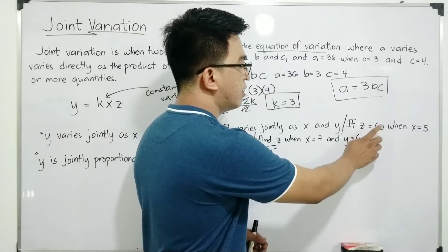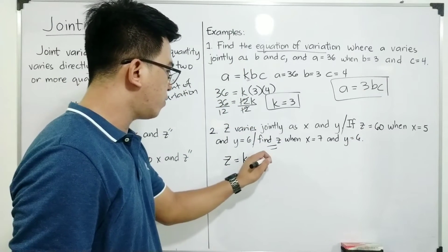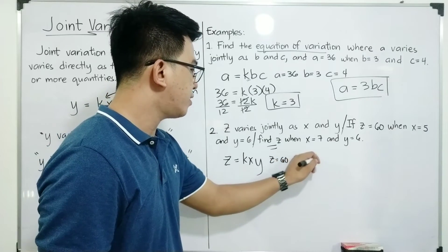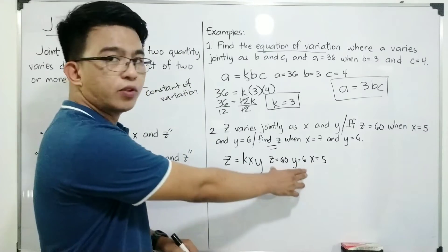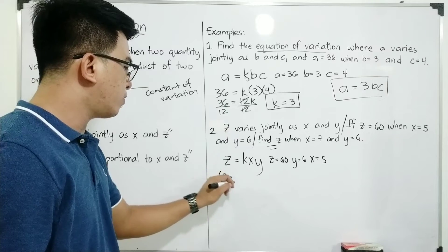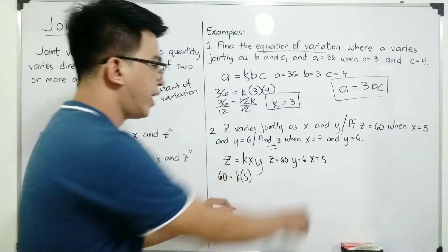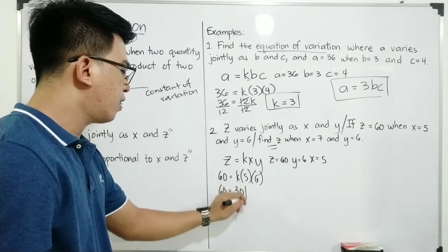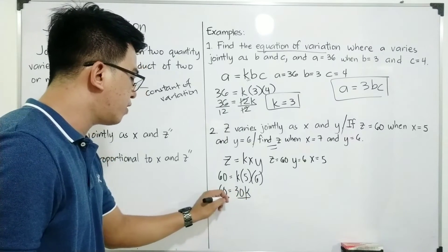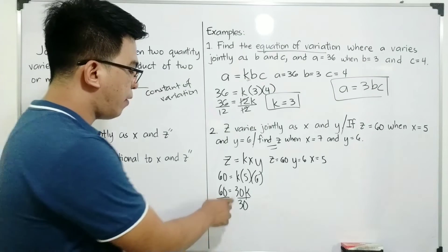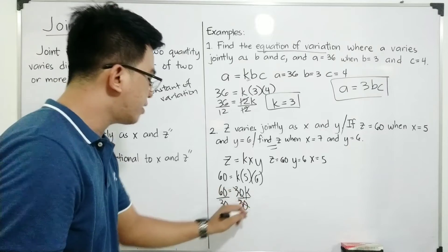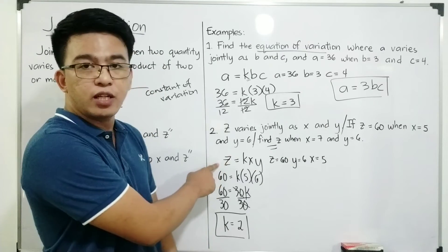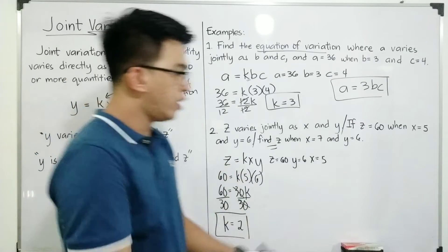Using the given values: z is equal to 60, y is equal to 6, and x is equal to 5. We substitute all these values into the equation: 60 is equal to k times 5 times 6. Simplifying gives us 60 is equal to 30k. Divide both sides by 30 — the purpose is to isolate k — cancel and cancel. Your k is now equal to 2. This is our constant of variation. After finding the constant of variation, go back to the original equation and substitute 2 for k.